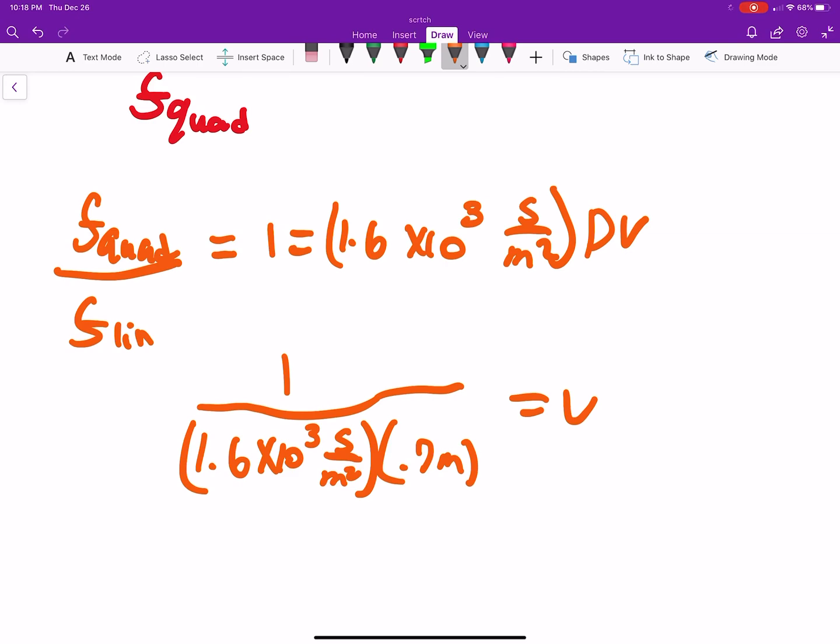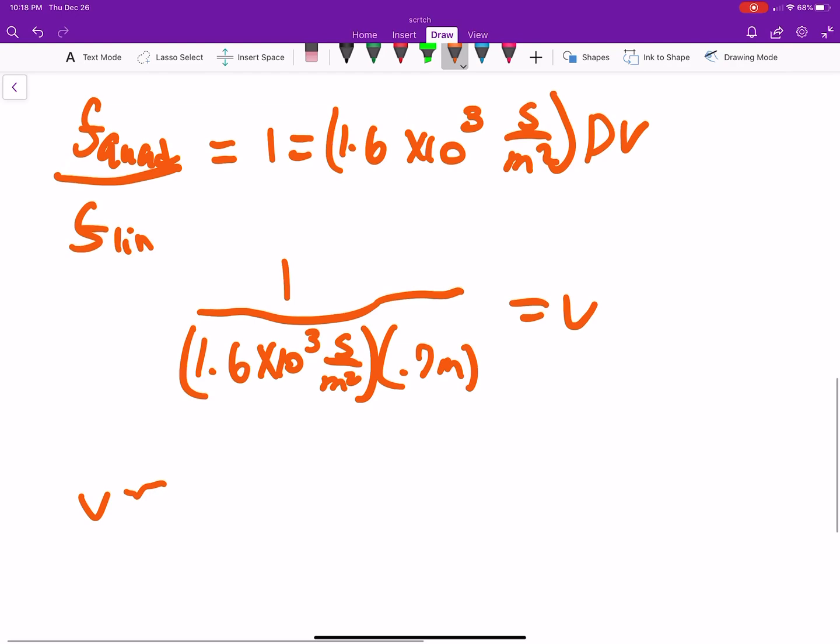And now if I were to plug that in, let me just get rid of that bit because that will throw my answer off. I get V to be about 8.93 times 10 to the negative fourth meters per second. Okay, our units work out.